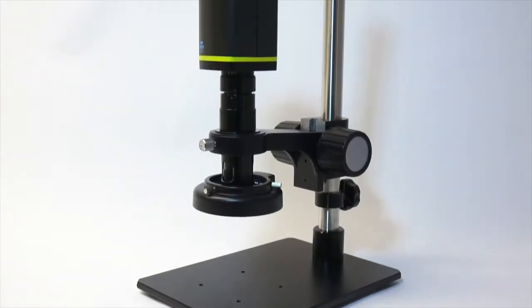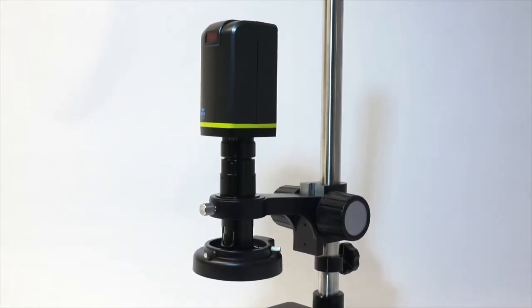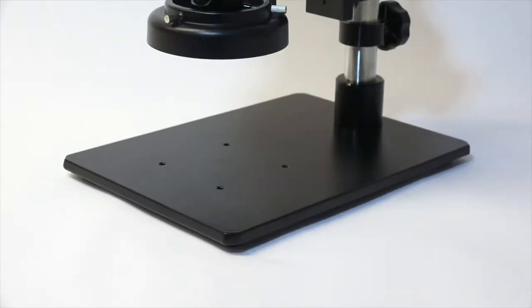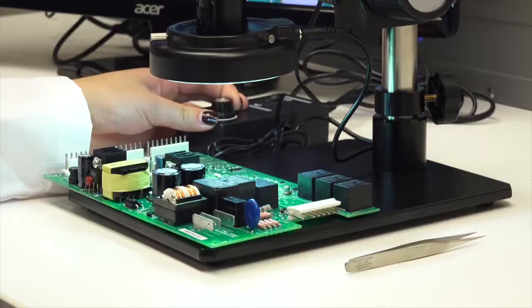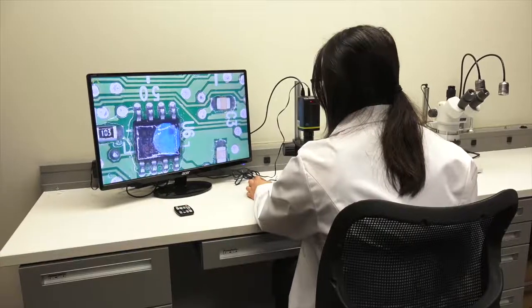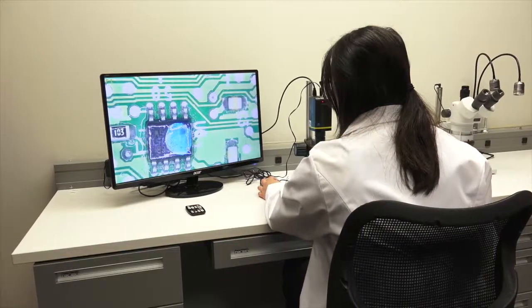The Cyclops Micro comes complete with a deluxe 16-inch post stand with a heavy metal base, a focus mount with fine focus adjustment dials, and an LED ring light with 60 ultra-bright adjustable LEDs.